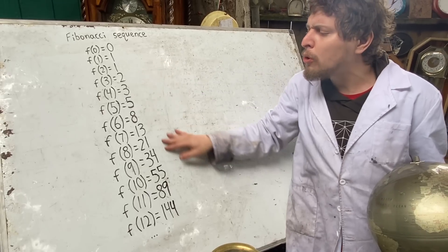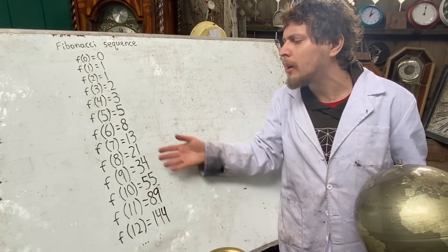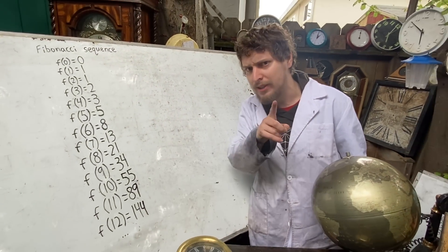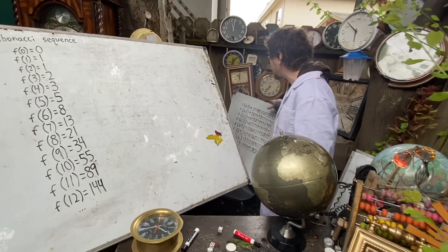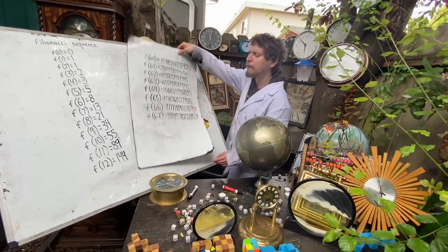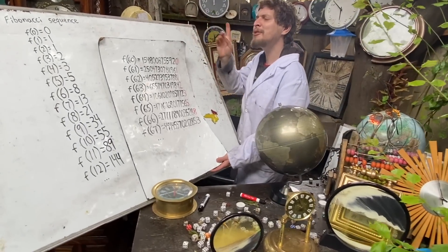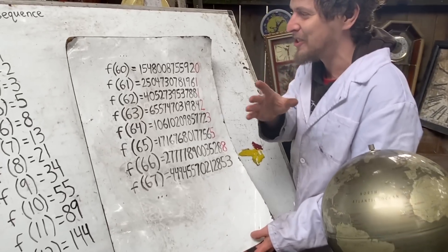These will quickly grow to multi-digit numbers with all sorts of appearances. But if we jump ahead in the sequence a little bit, say to the 60th Fibonacci number, an interesting pattern emerges.